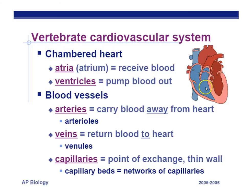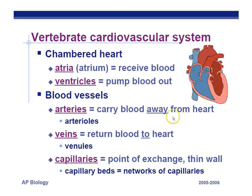The right-hand side will pump to the lungs and pick up oxygen and drop off carbon dioxide. The left-hand side will pump to the body cells, and that does a lot more work. On this side of the heart, the walls of the cardiac muscle are thicker. Arteries are always away from the heart — A for artery, A for away. Then they branch into smaller vessels called arterioles.